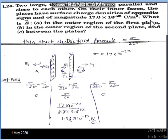We are asked in the question: what is the electric field (a) in the outer region of the first plate, (b) in the outer region of the second plate, and (c) between the plates? So we are given three regions: a, b, and c. Sigma is given.